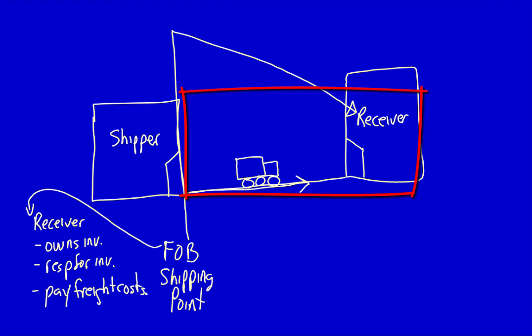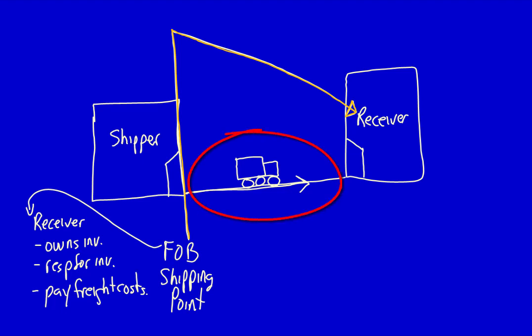The receiver owns the inventory while it's in transit, is responsible for inventory damages if they happen in transit, and pays 100% of the freight cost to ship the goods from one location to the other. That's why when I draw this line I have an arrow going straight to the receiver, because it's the receiver who takes full responsibility for the inventory while it's in transit.